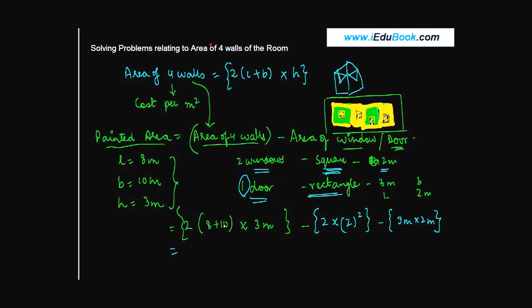8 plus 10 gives you 18. 18 times 2 gives you 36. 36 into 3 gives you 108. Minus 2 squared gives you 4, times 2 gives you 8. Minus 3 times 2 gives you 6. So you get 94 square meters as the painted area.